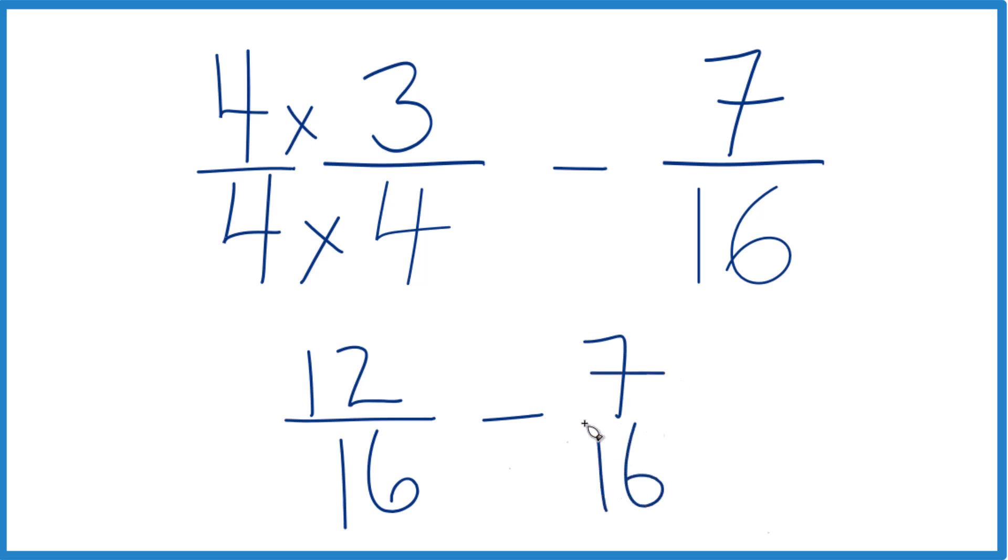So now we have this common denominator here and here. And 12 minus 7, that equals 5. Then we just bring the sixteenths across and we have 5 sixteenths. So 3 fourths minus 7 sixteenths does equal 5 sixteenths.